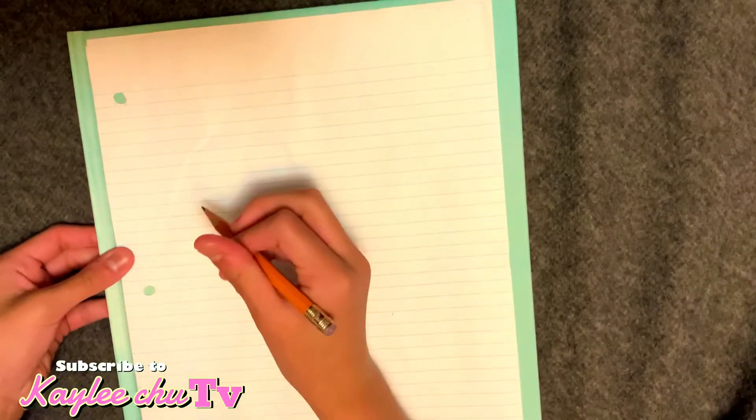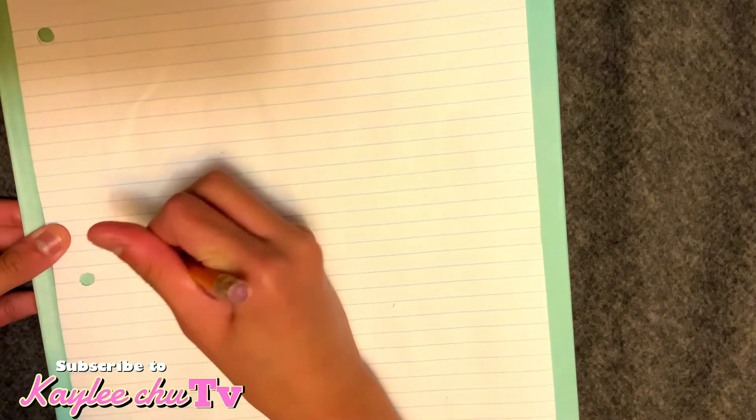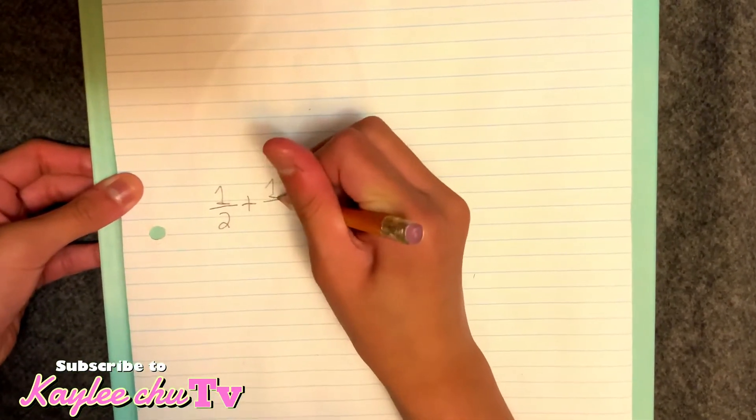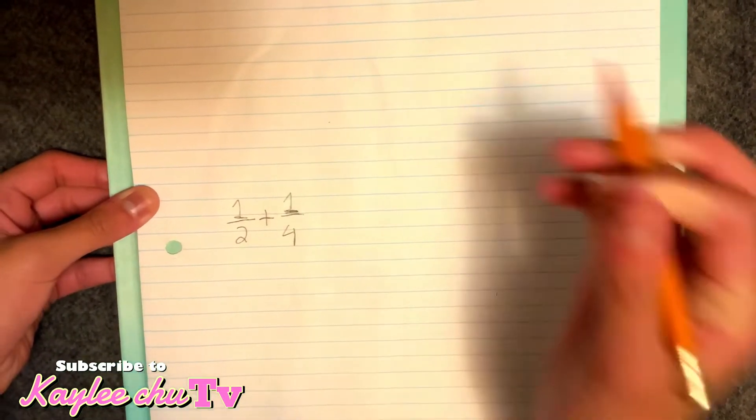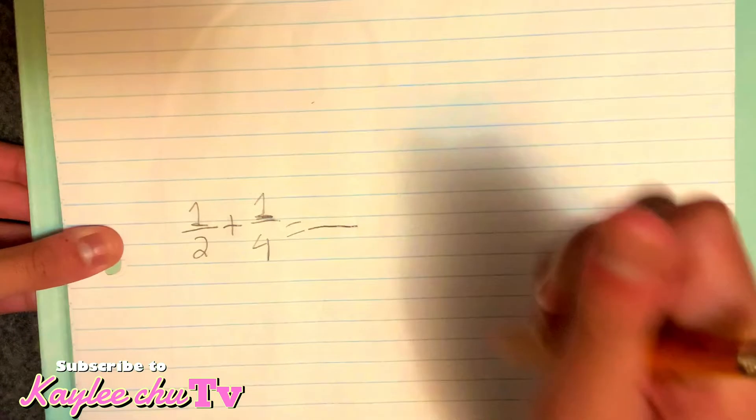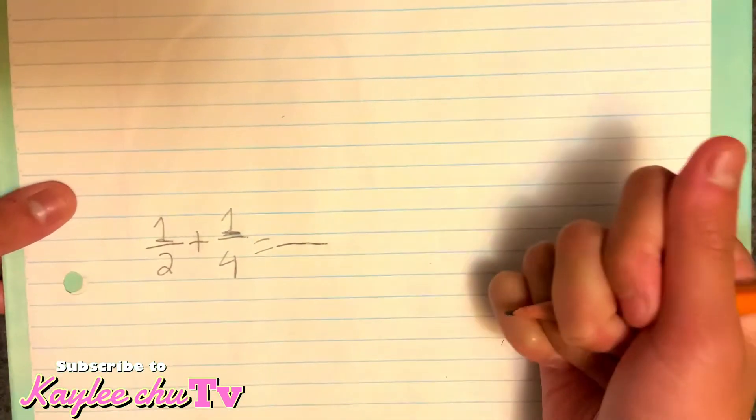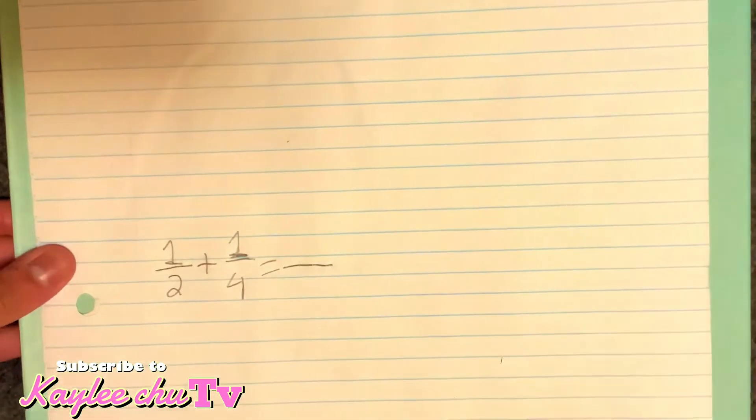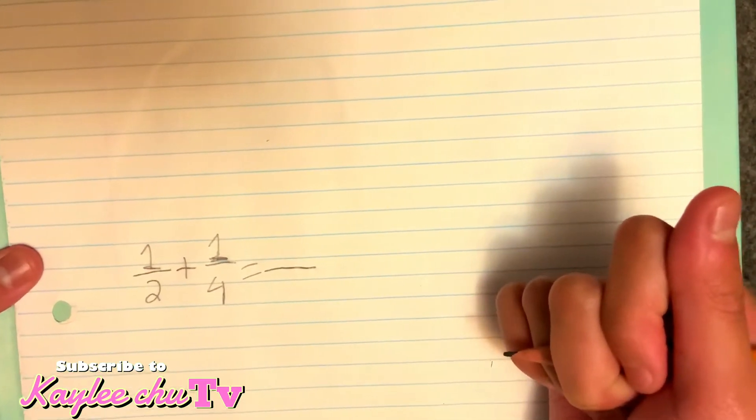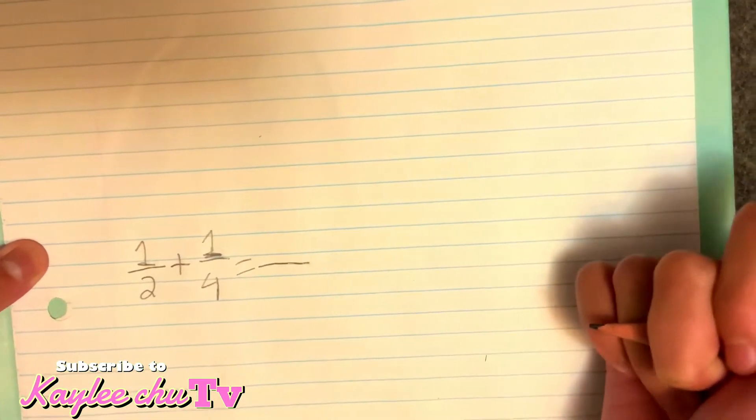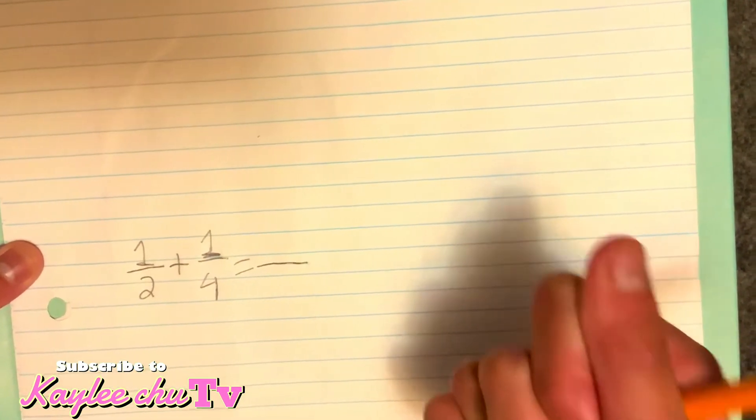So we're going to start with one half. One half plus one fourth. Right there. Right there, big for you. And also, we'll have the equation there. So the first thing we're going to do to find our answer will be what is the least common denominator. If you guys don't know what's the least common denominator and you can't find out, then maybe you should go back to your multiplication timetable. So now let's look.